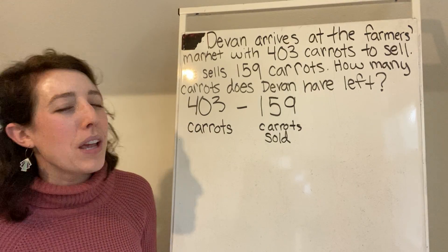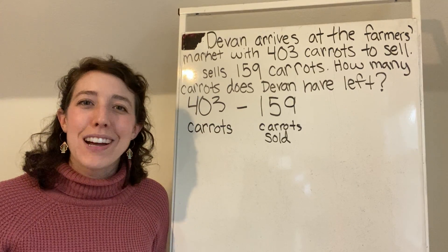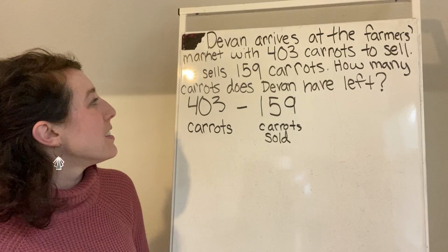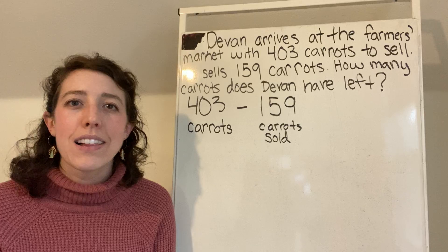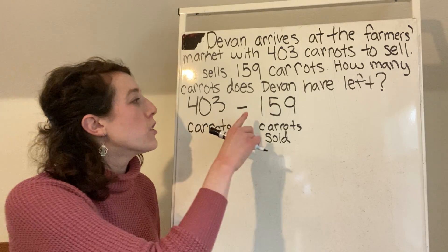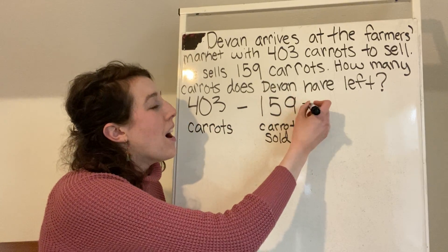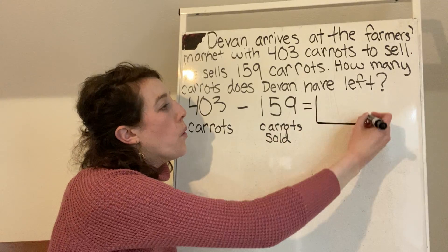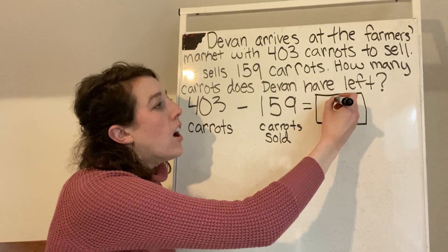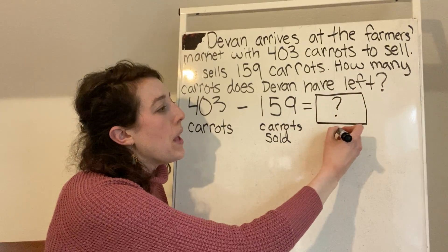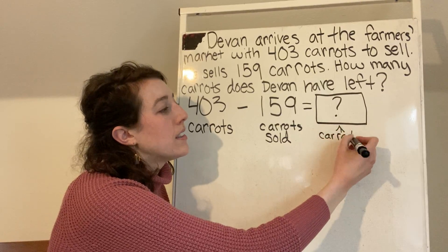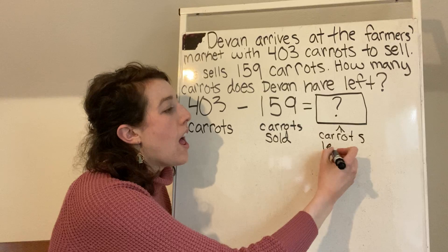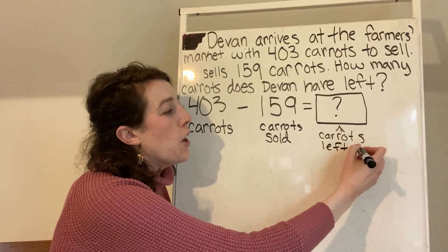And then finally, we have one more sentence to look at. Our question says, how many carrots does Devin have left? So 403 minus 159 will give us our answer. I will call that box carrots left over.